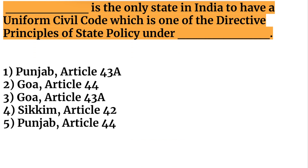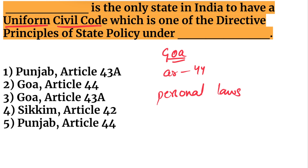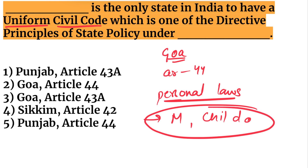Which is the only state in India to have a Uniform Civil Code, which is one of the Directive Principles of State Policy? The answer is Goa, and the related article is Article 44. The Uniform Civil Code means that personal laws — such as those relating to marriage and child adoption — apply to every individual irrespective of their religion.